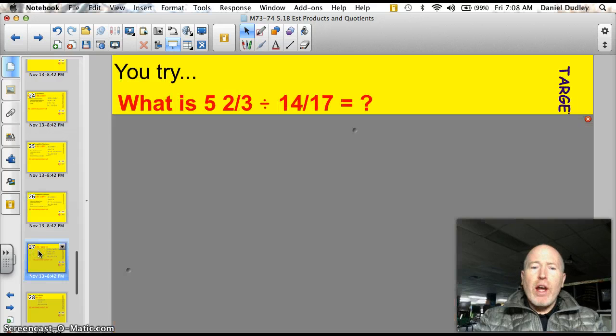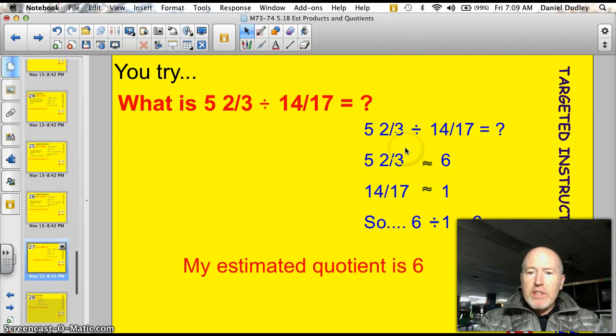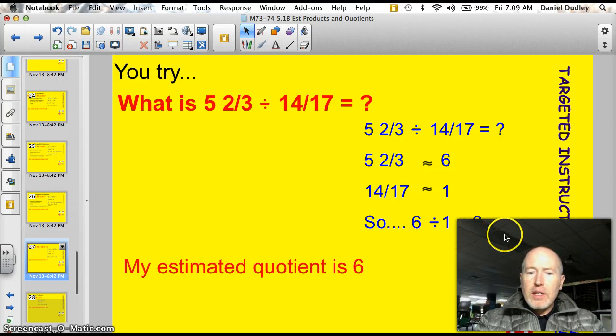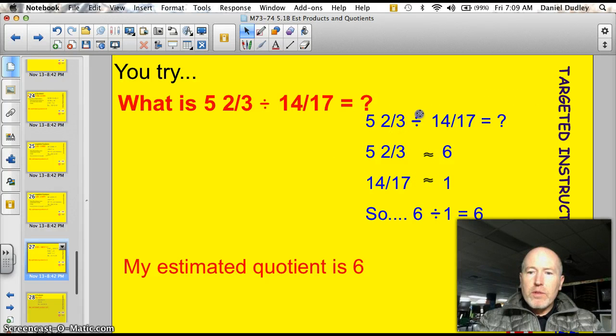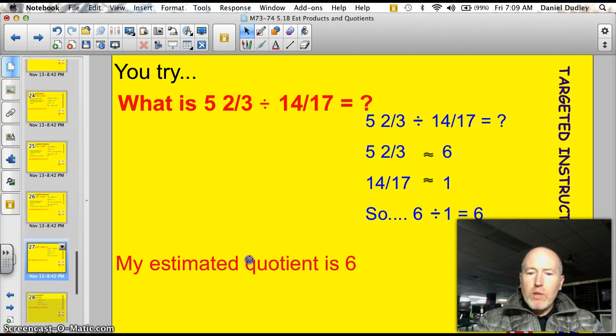A couple other ones for you to try on your own here. What is 5 and 2 3rds divided by 14 17ths? Go ahead and give it a shot. Let's take a peek. 5 and 2 3rds divided by 14 17ths. Well, 5 and 2 3rds is about 6, because this is way over half. 14 17ths. So, that's about 1. So, hey. 6 divided by 1 is 6. I'm going to move this up so I can make sure you can see that. I'm going to move my division sign up, too. That should be good. Let me go up and double check. 6 divided by 1 is 6. Yes. My estimated quotient is 6.